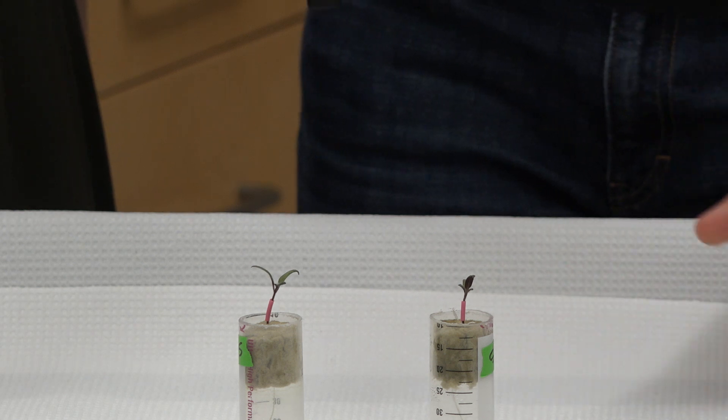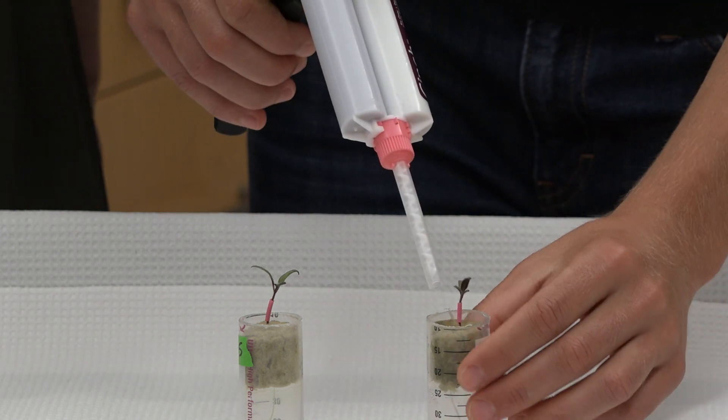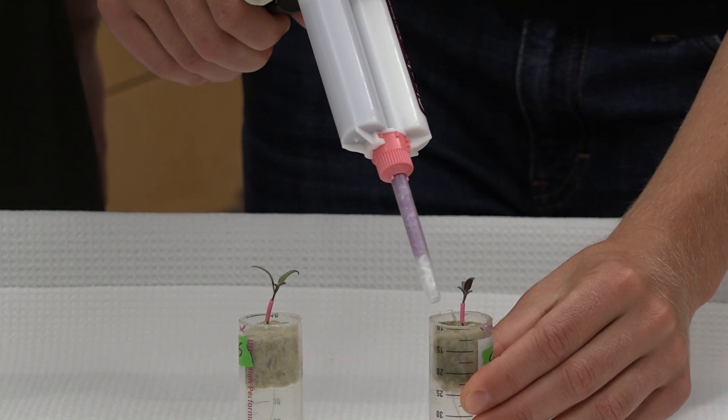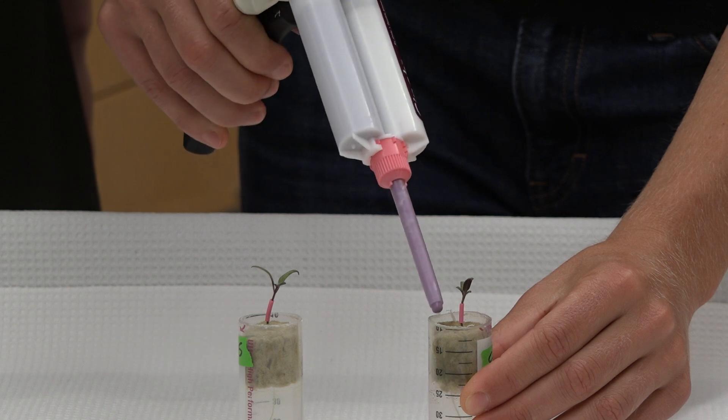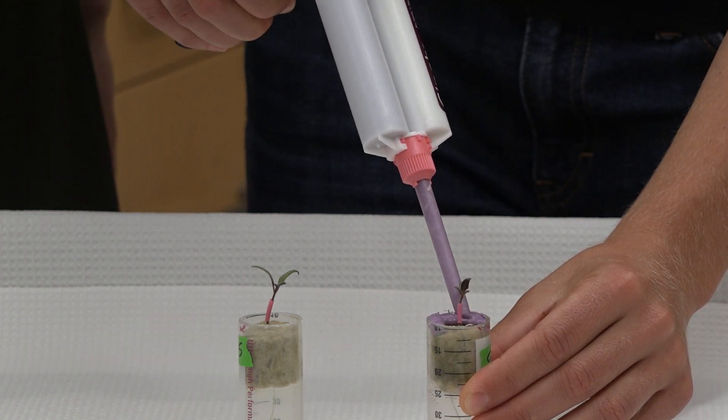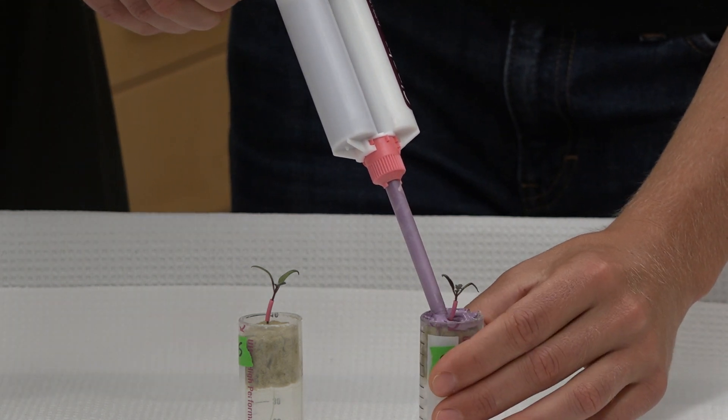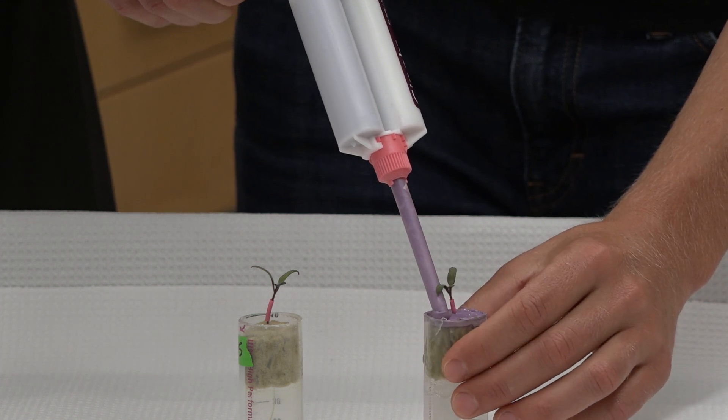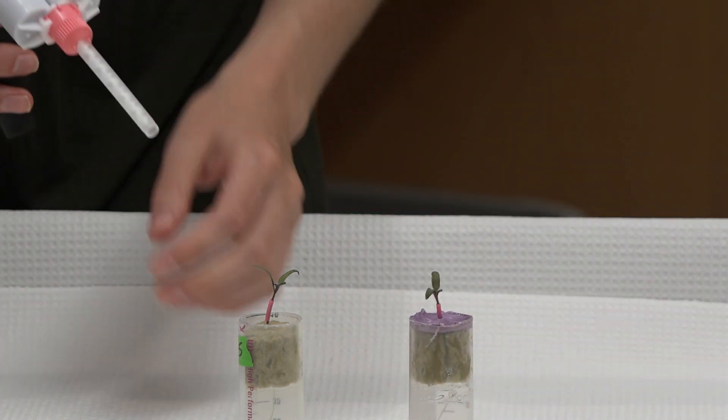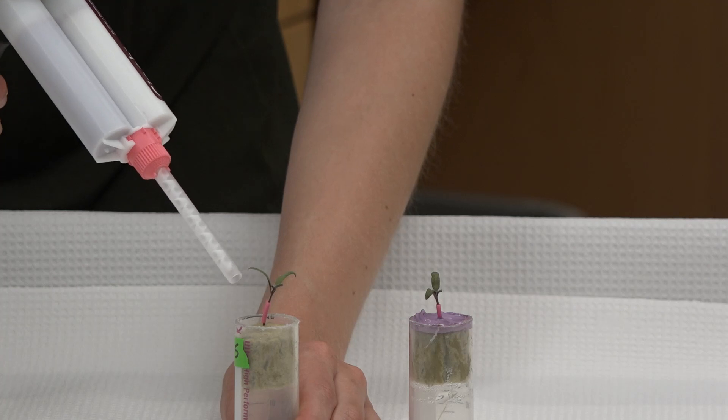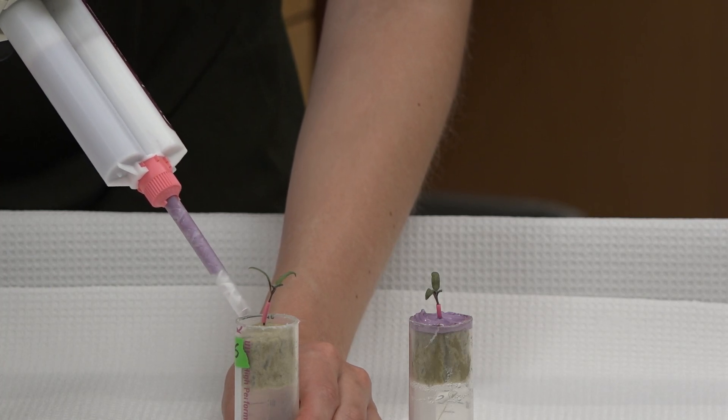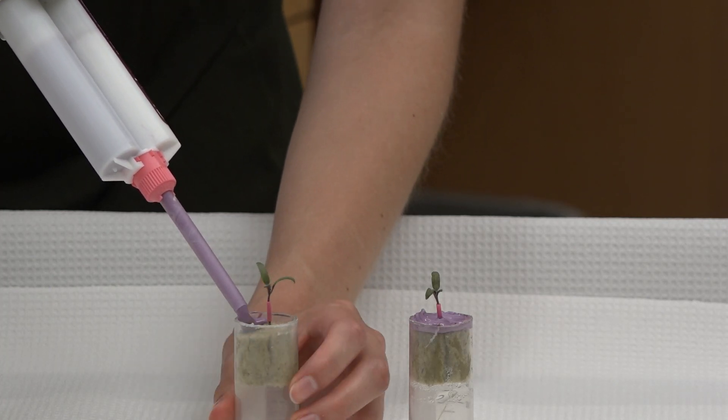So to prepare these plants for the PET imager, we're going to seal them off so that we can feed them the radioactive carbon dioxide. To seal these plants, we use dental impression media. This is the same product that dentists use to take impressions of your teeth. And it can make an airtight seal around the base of the plant. Do you want to do one, Molly? Yes, so badly. You get 90 seconds before it hardens. Wait, really? Oh my gosh, okay. A lot of pressure. Pressure's on. Seal it.